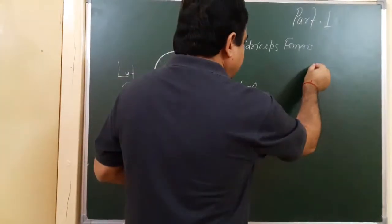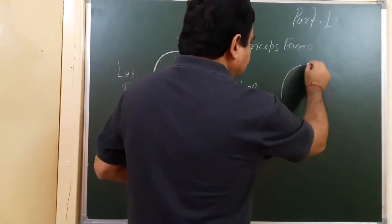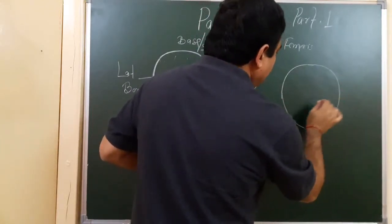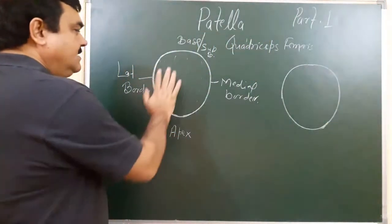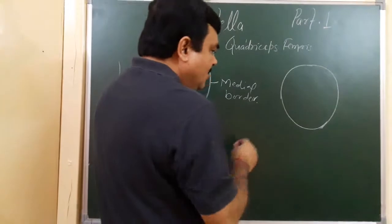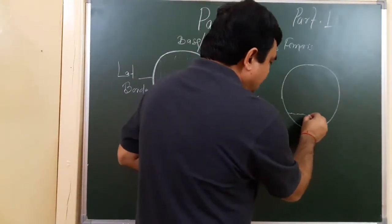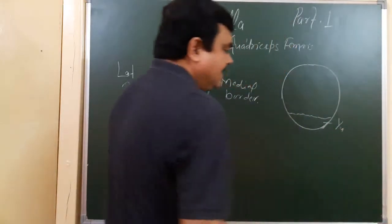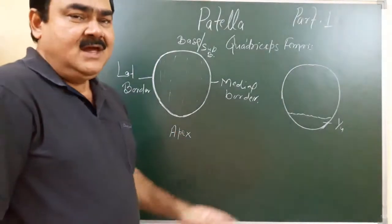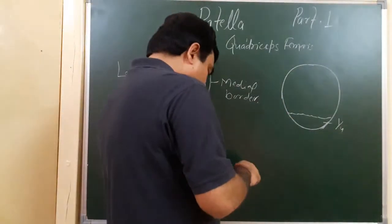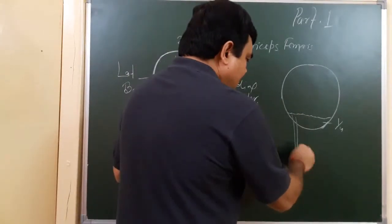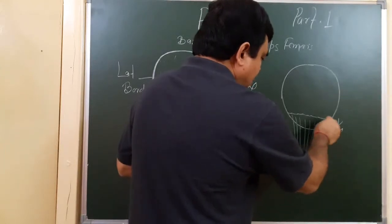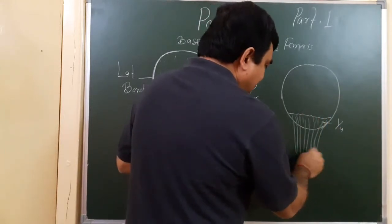About one-fourth part of the posterior surface — the lower one-fourth — is rough and non-articular. It provides attachment with the ligamentum patellae.